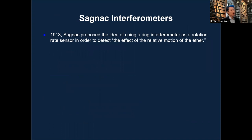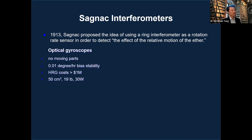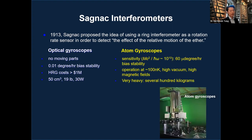We focus on the Sagnac interferometer, which is the basis of optical gyroscopes. In 1913, Sagnac proposed using a ring interferometer as a rotation rate sensor to detect the effect of relative motion. Optical gyros based on the Sagnac effect have excellent bias stability but are expensive, bulky, and fragile — suitable for submarines and airplanes, but not for soldiers, gun-launch, or similar applications.